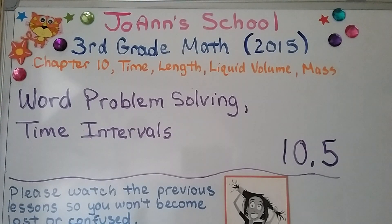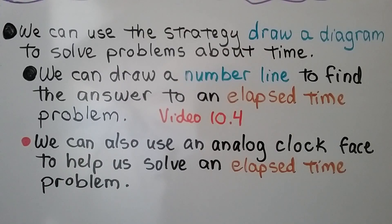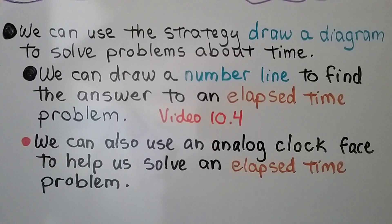Lesson 10.5: Word Problem Solving Time Intervals. We're going to be solving word problems that involve elapsed time. We can use the strategy of drawing a diagram, such as a number line, to find the answer to an elapsed time problem. We first started doing that in the last video, 10.4, which is linked in the description. We can also use analog clock faces, but we're going to focus on using number lines in this lesson.